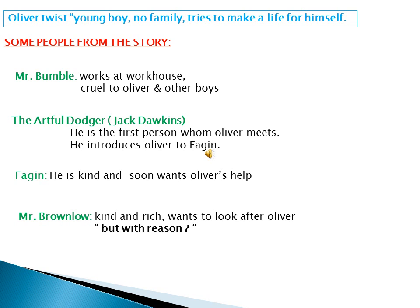In this novel, I am going to let you know about the characters — some people from the story. Number one character is Oliver Twist. Oliver is a young boy without any family. He is alone in London and must try to make a life for himself so that he can survive. Another character is Mr. Bumble. He works at the workhouse and he is cruel to Oliver and other boys as well.